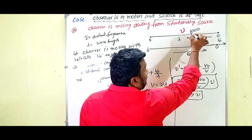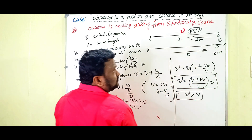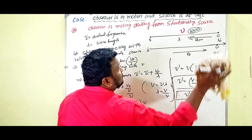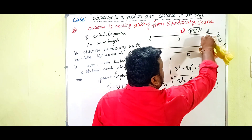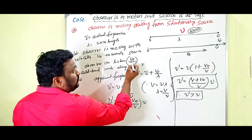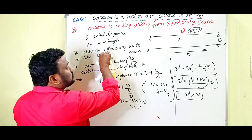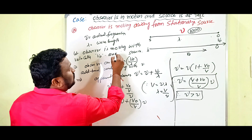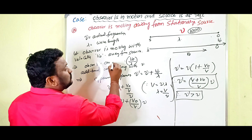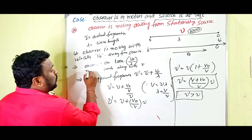When the observer is moving away from the source, the observer can lose some number of waves. That number is v₀/λ. So when the observer moves away with velocity v₀, the observer loses v₀/λ number of waves.